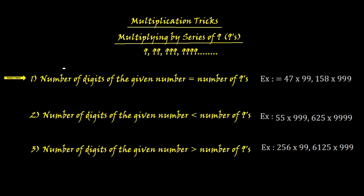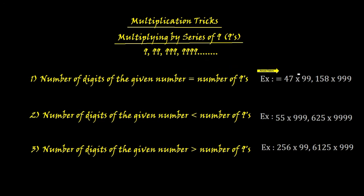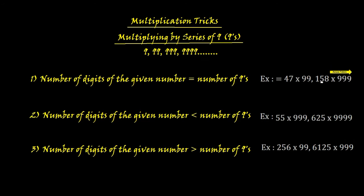Case one: when the number of digits of the given number being multiplied is the same as the number of nines. Examples: 47 times 99 — two digits and two nines; 158 times triple nine — three digits and three nines.